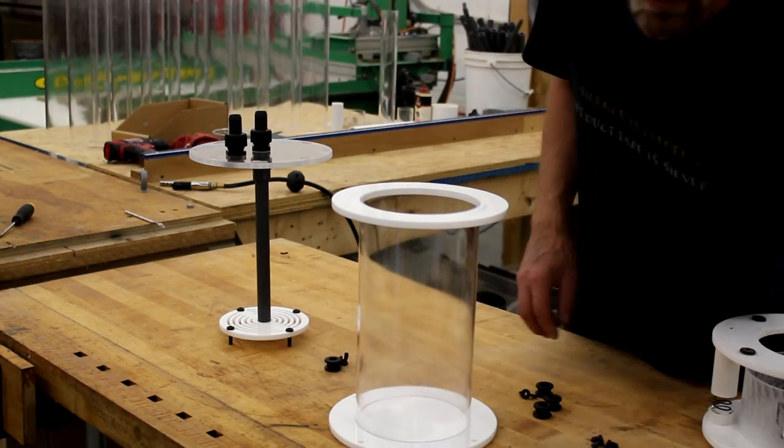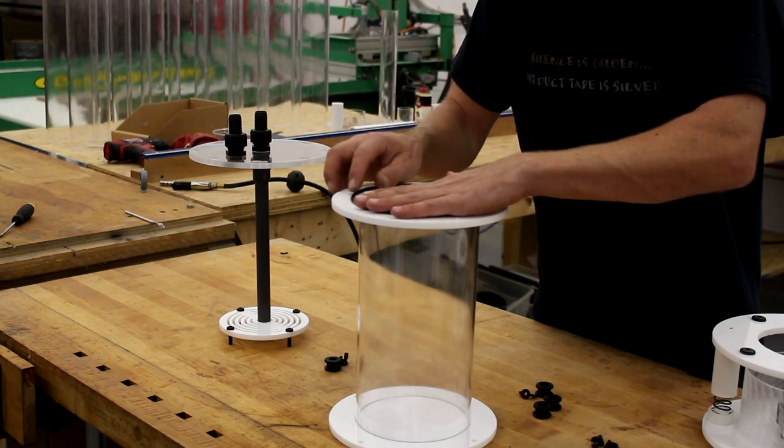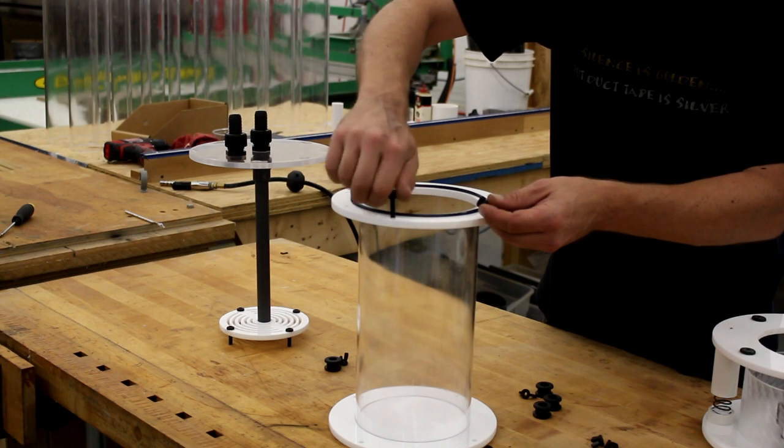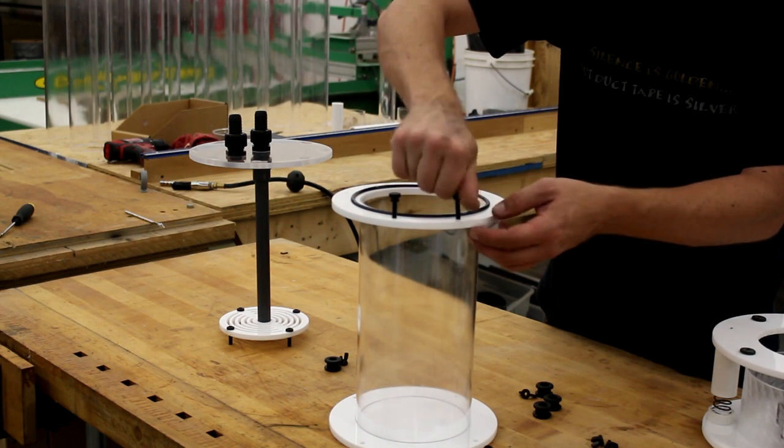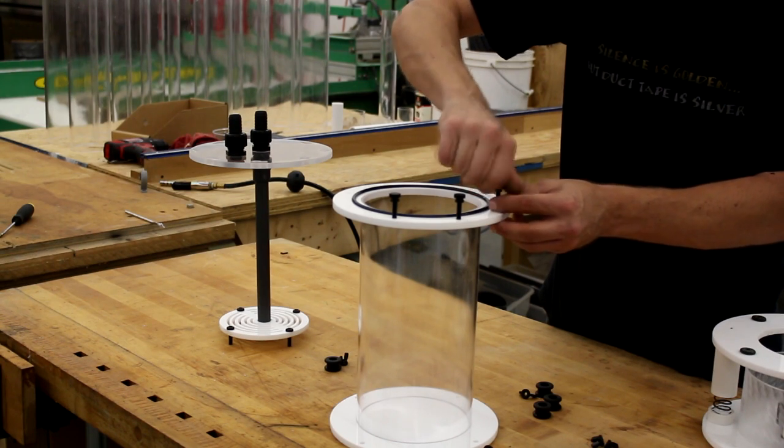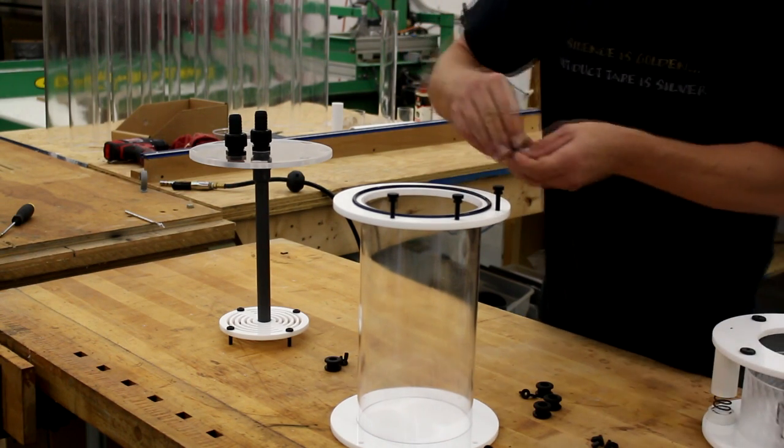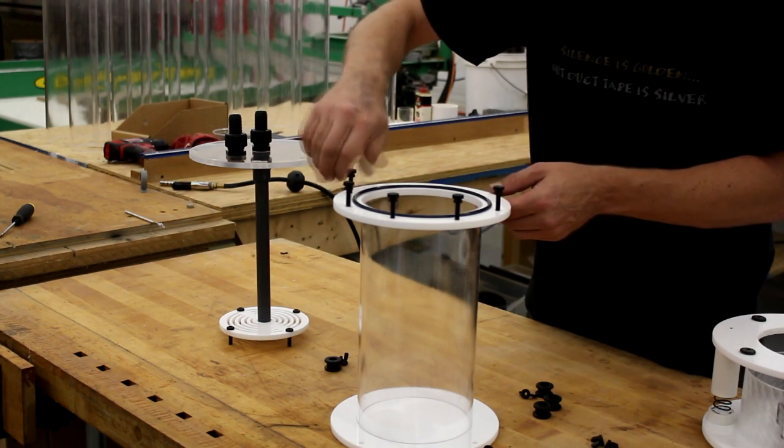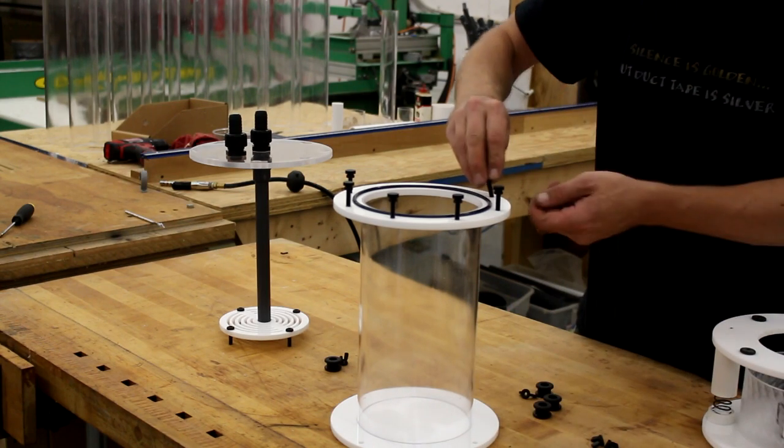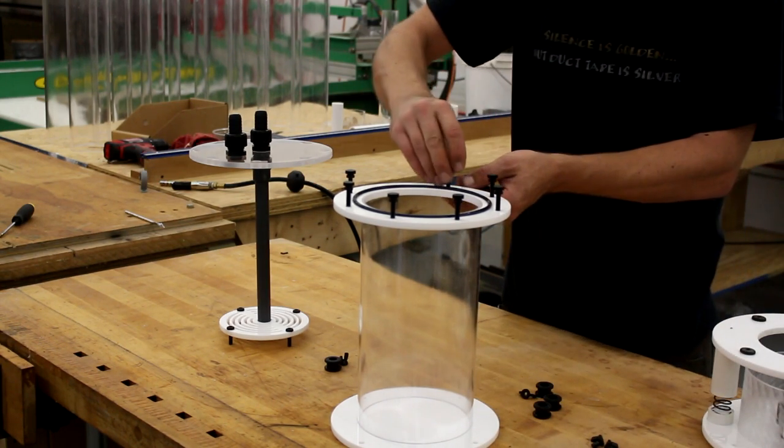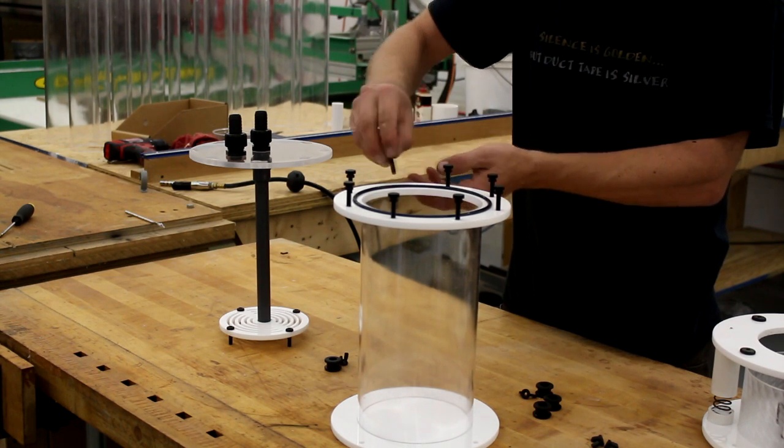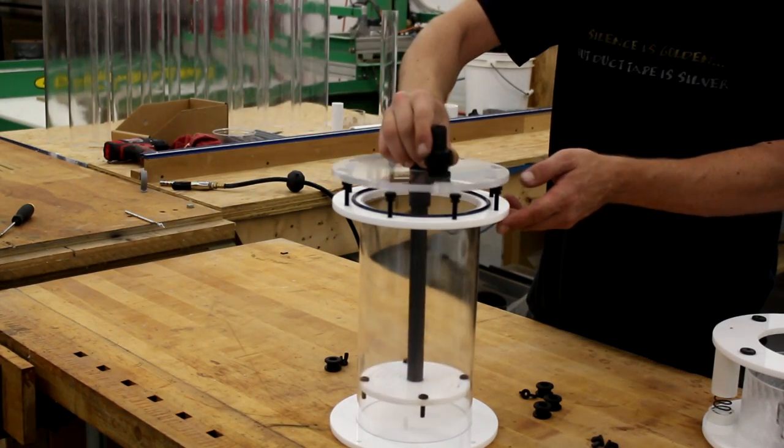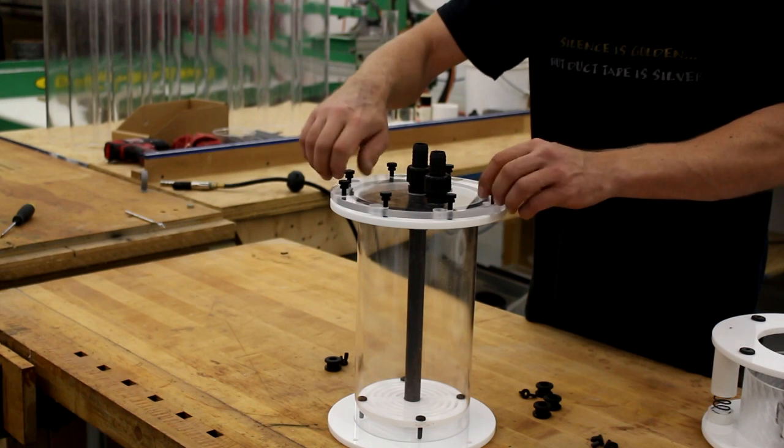Next, we're going to add the O-ring and the 8 1-inch thumbscrews to the flange. And we can place our lid assembly onto the reactor.